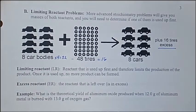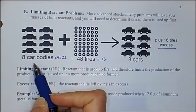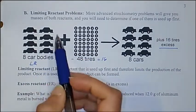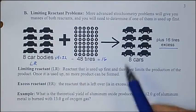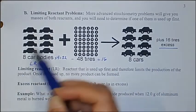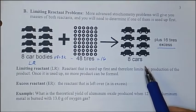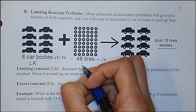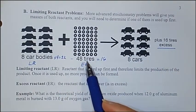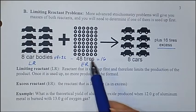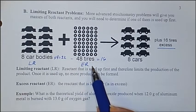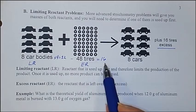From those 48 tires, 48 minus 32 would give me a total of 16 excess tires. The one factor that determines how many cars I'm going to be able to make is the car bodies. So this would be my limiting reactant because this determines how many cars will be made, or what my final total for my product will be. On the other hand, tires is your excess reactant because you have too much of it — you have 48, about 16 more tires than you really need.